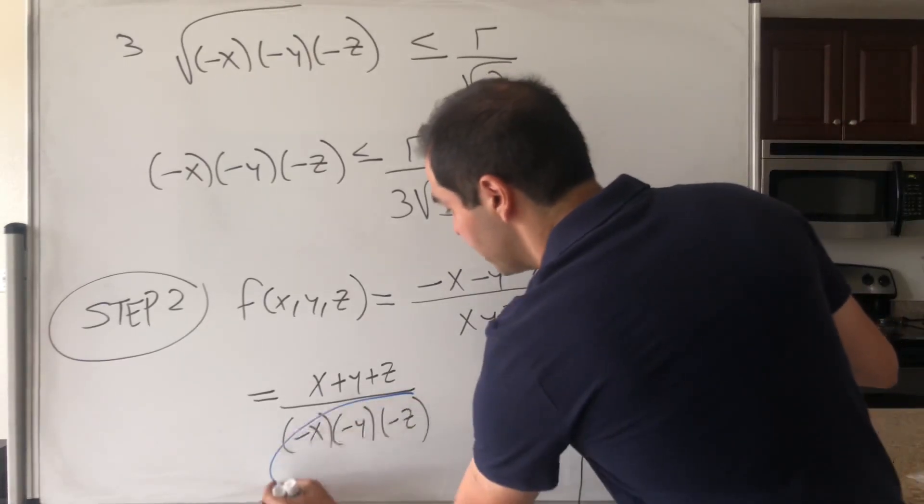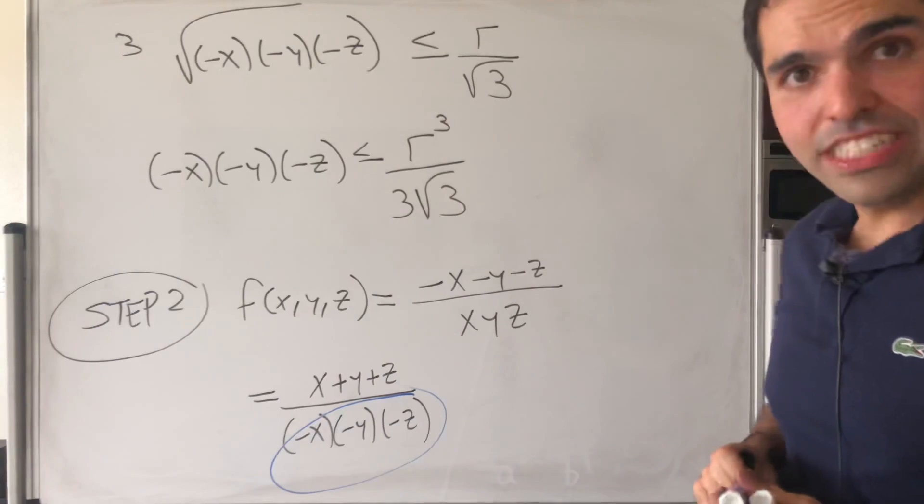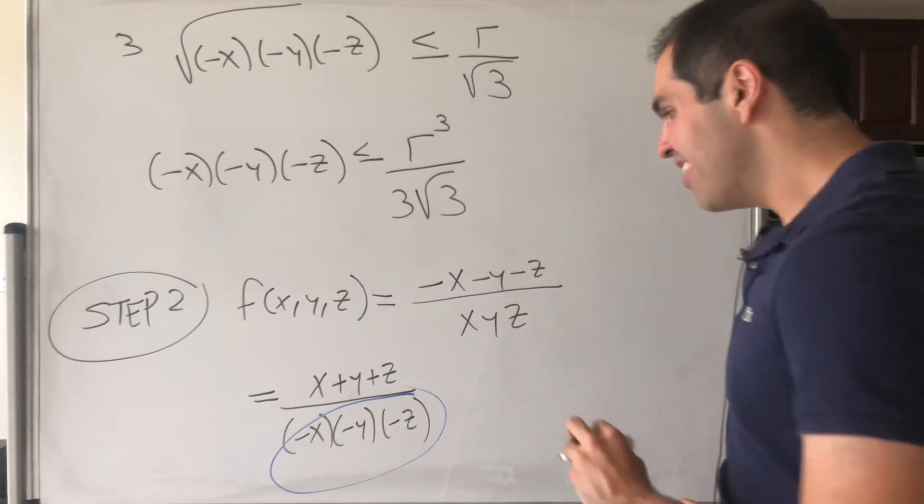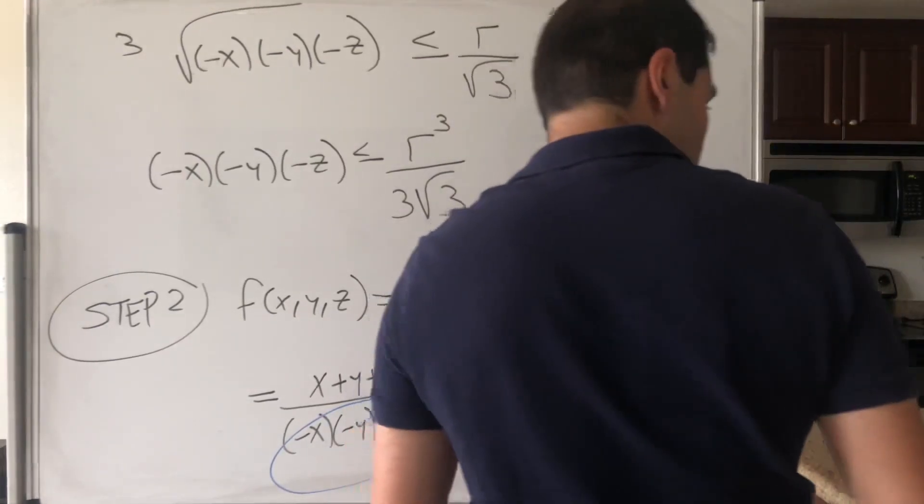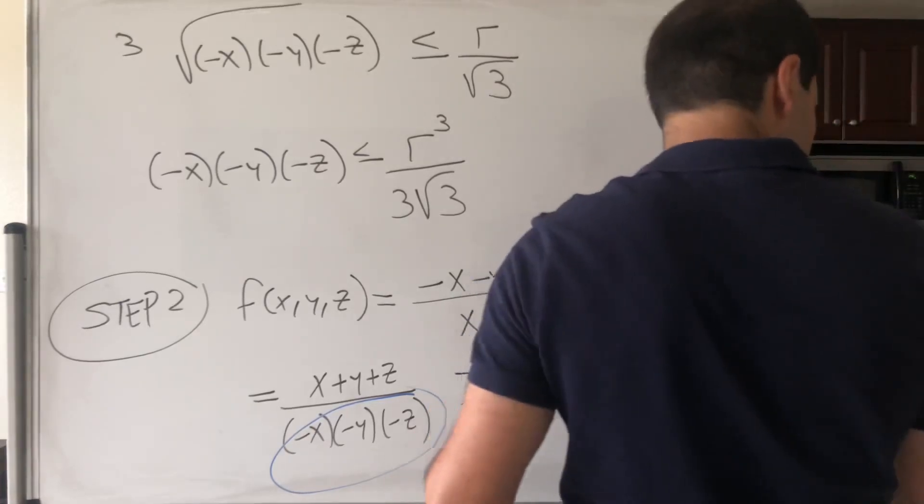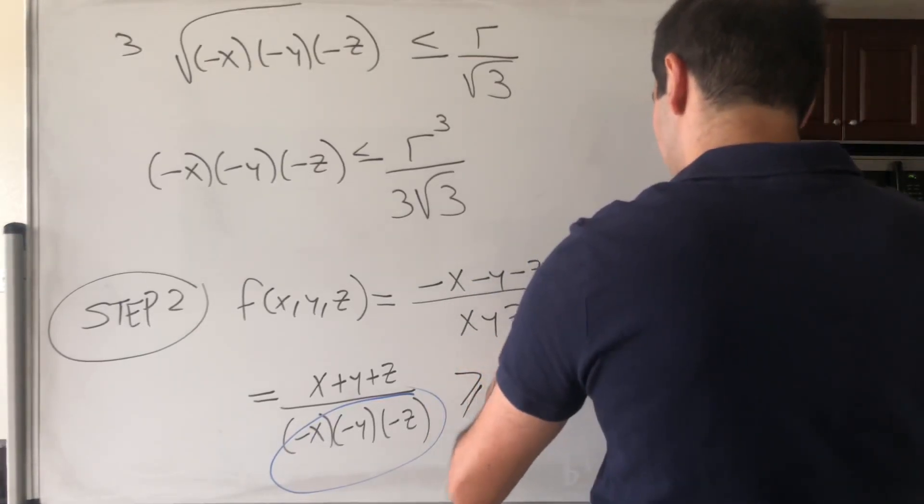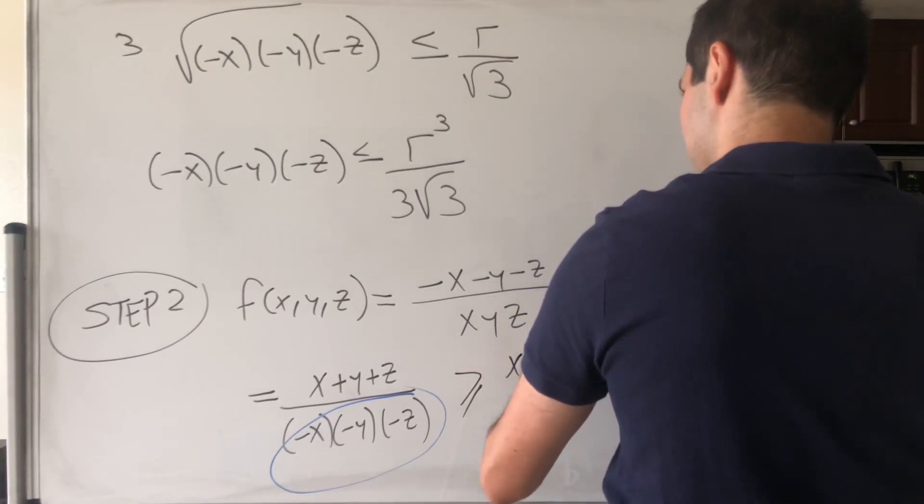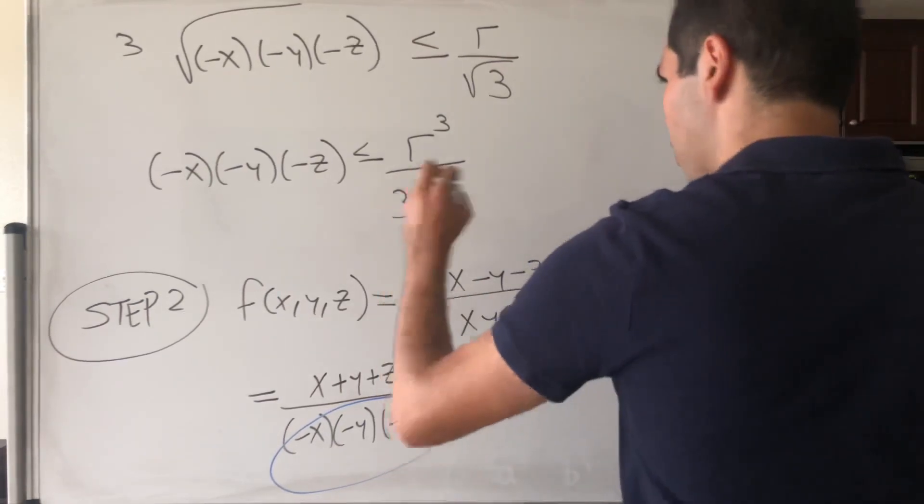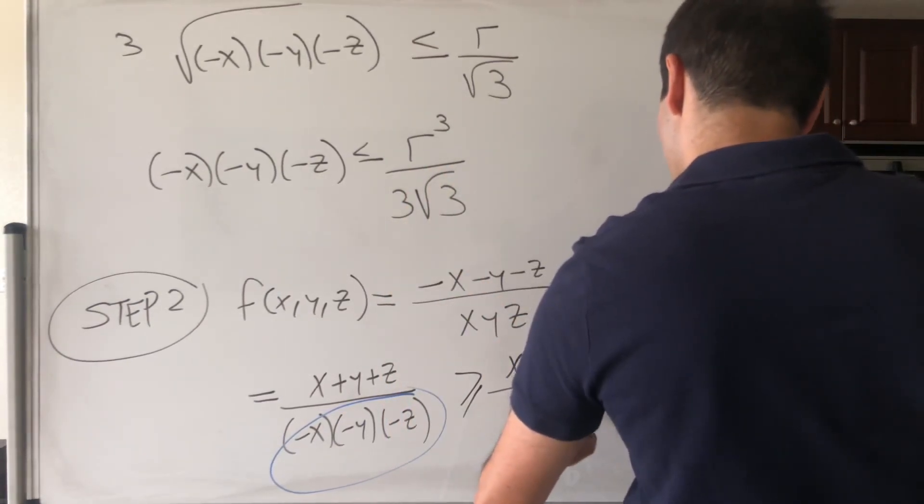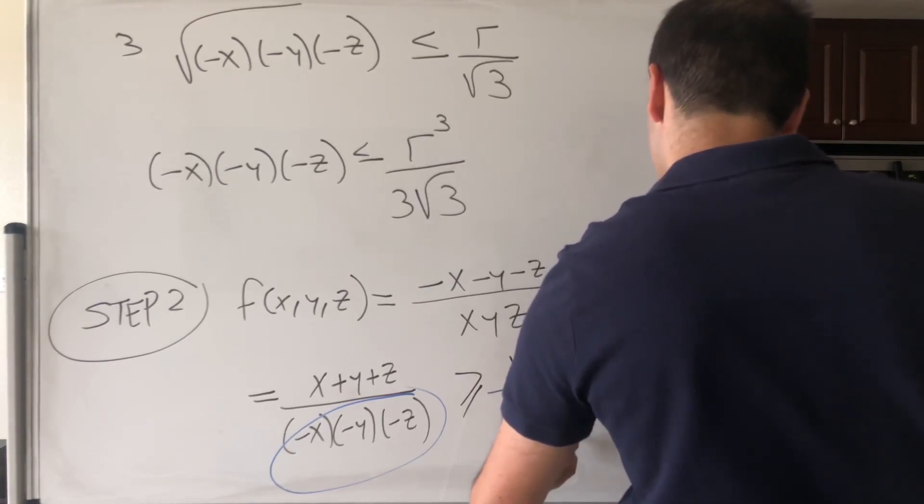But this is great because, now, this is on the denominator, and we have a less than or equal. So, now, it becomes greater than or equal, which is just what we want for a minimum. So, this becomes x plus y plus z over, again, r cubed over 3 square root of 3.